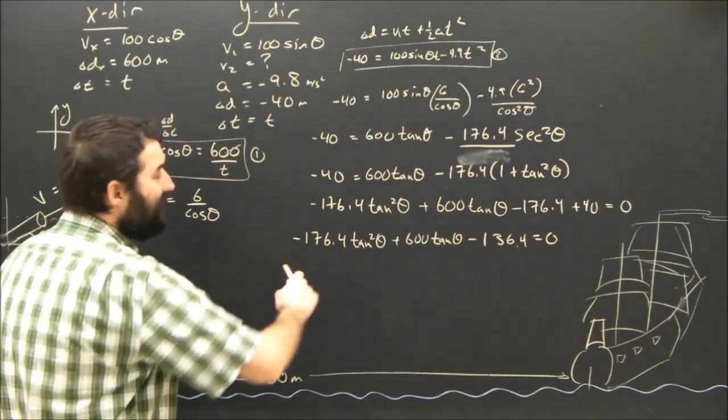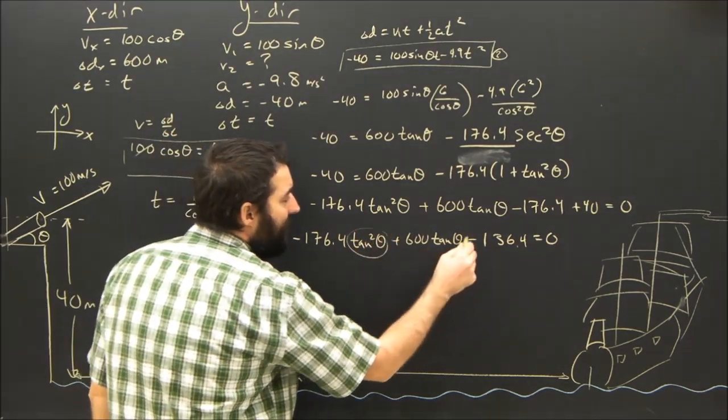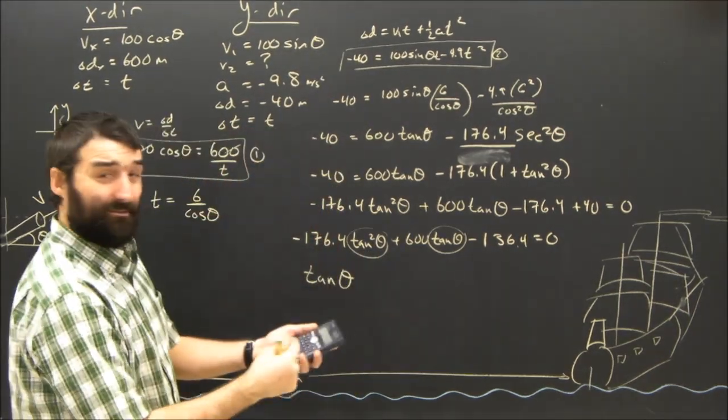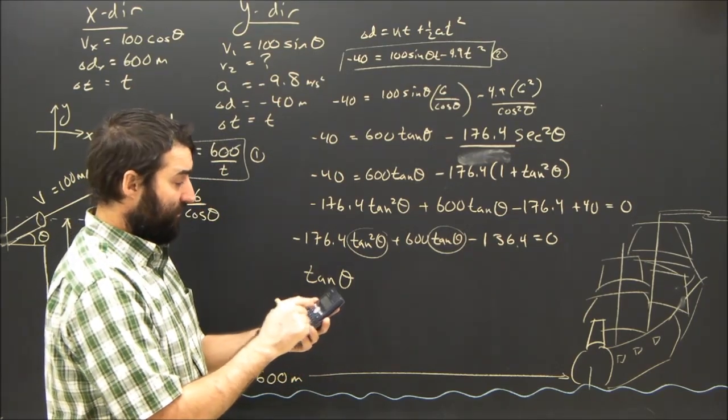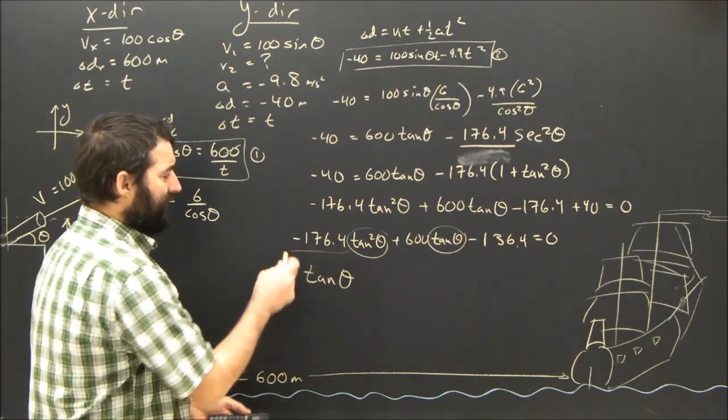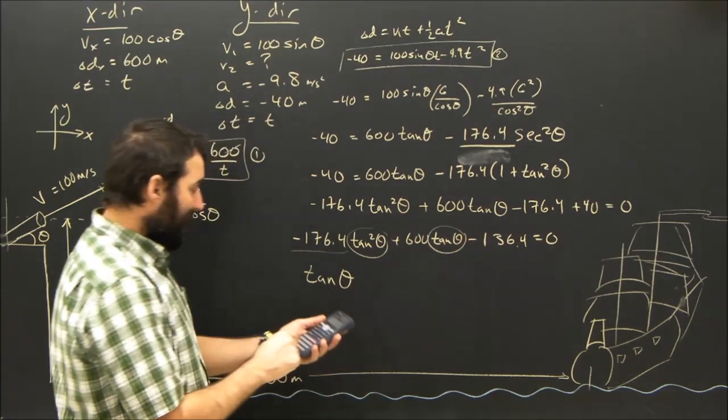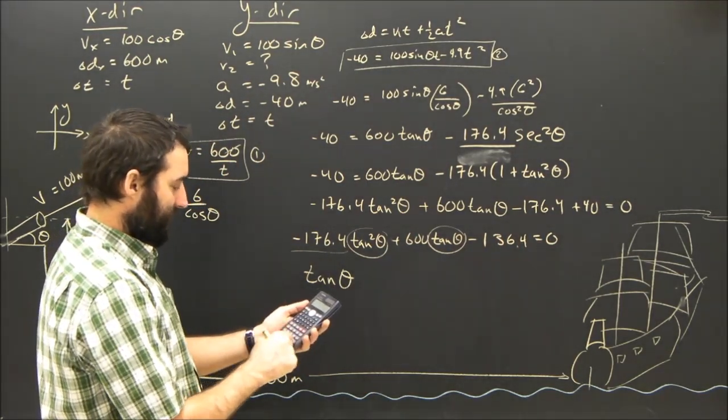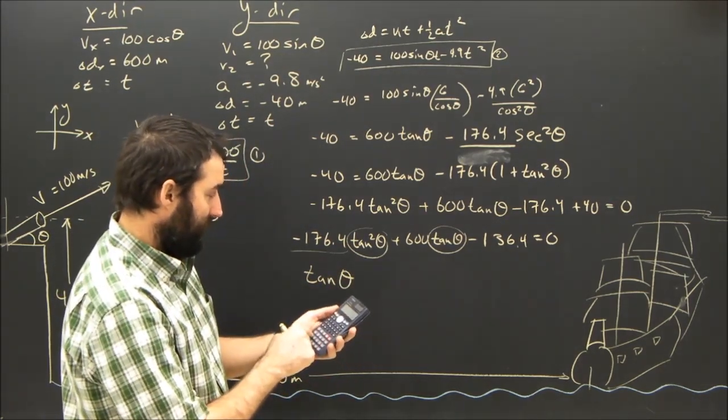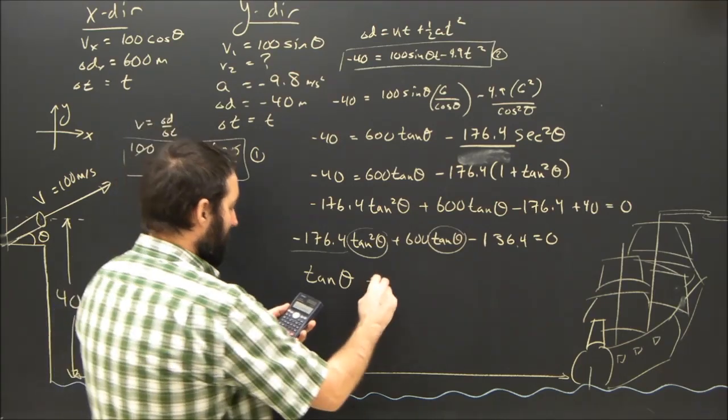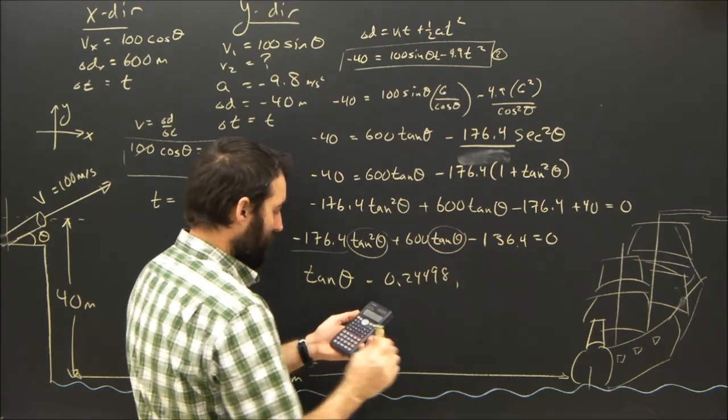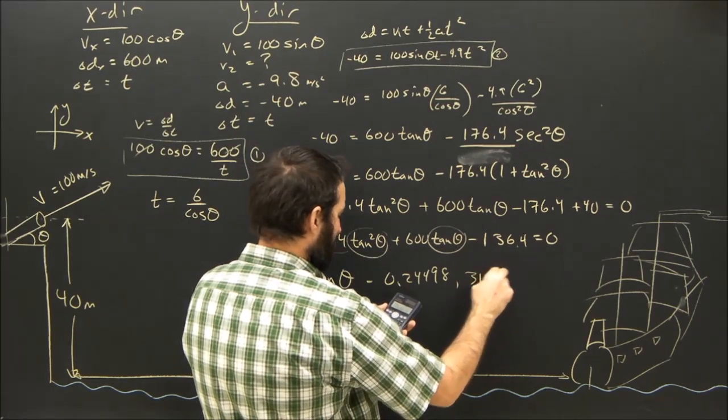Okay, so what? Well, so what? This is just a quadratic formula, except instead of x, we have tan theta. So using the quadratic formula, we can get tan theta. My calculator, which was like $15, if I hit mode a few times, it says equation. And then I can go to degree 2. And it asks me what a is. Well, a, of course, is ax squared plus bx plus c equals 0. a is negative 176.4, b is 600, and c is negative 136.4. This thing tells me, therefore, that tan is equal to either 0.24498 or 3.15638. More decimals, obviously.